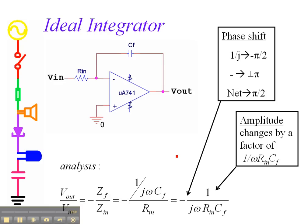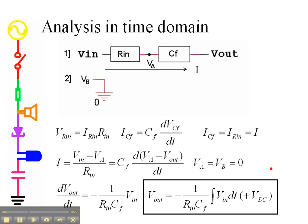All right, here we have the opposite situation where the feedback impedance is capacitive and the input is resistive. If you go through this analysis, it looks like this, or if you do it in the time domain, it ends up looking like this, which is a little bit easier to see.